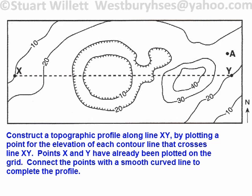Construct a topographic profile along line XY by plotting a point for the elevation of each contour line across line XY. Points X and Y have already been plotted on the grid. Connect the points with a smooth curved line to complete the profile. What I'm going to do is mark where every contour intersects this line. I'm going to first mark the elevations of each contour line above the line, because when I cross out the bottom part of the map you'll lose a lot of the data. So let me first put down the 20.